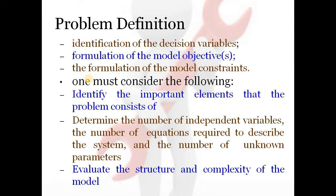The next stage is problem definition. Before defining a problem we need to identify the decision variables — the variables that decide the output. This identification will determine the formulation of the model objective and model constants, which are the parameters on which the output depends. At that point we will also be able to identify what the constraints of the problem are.